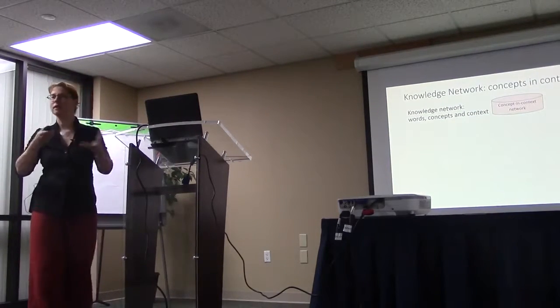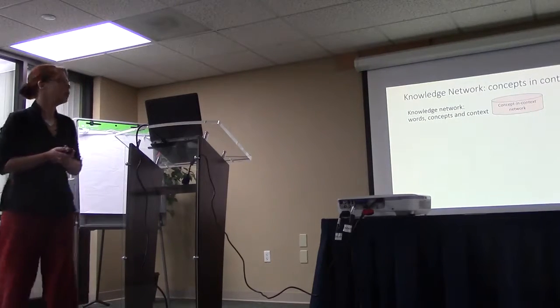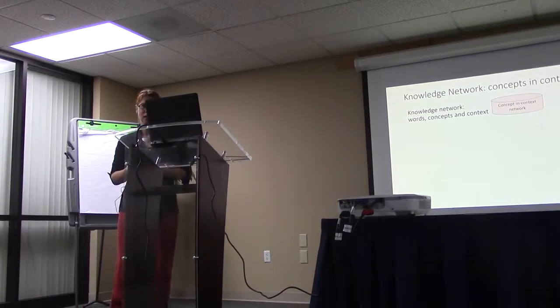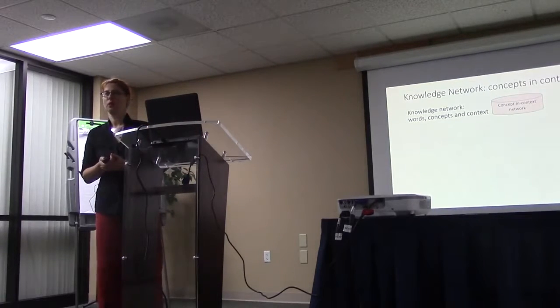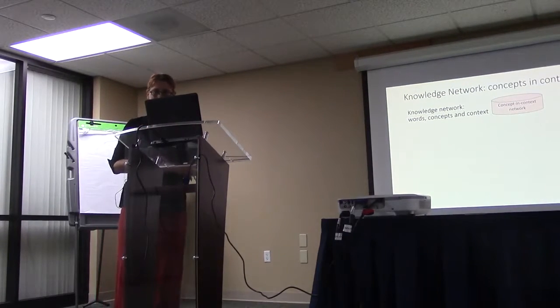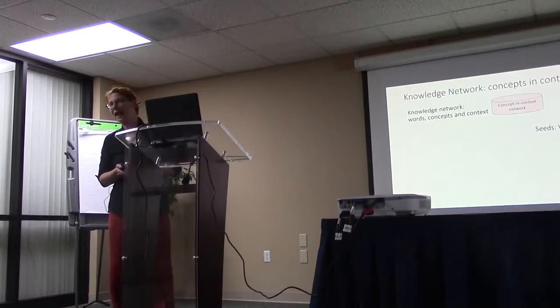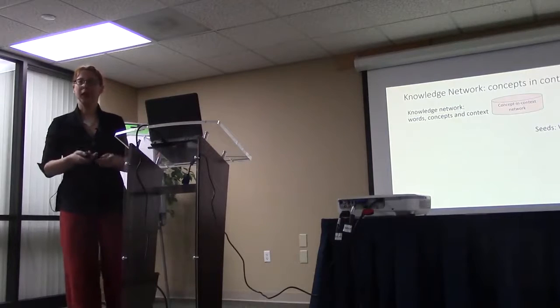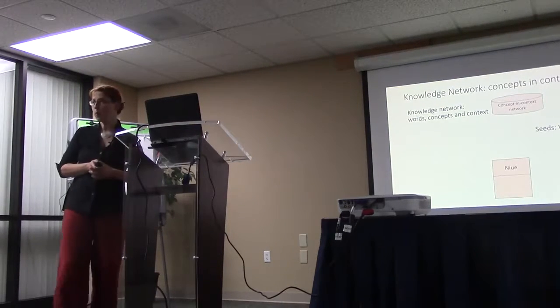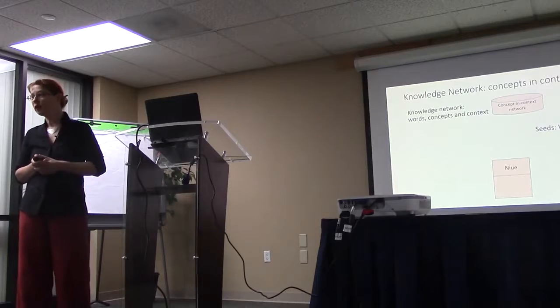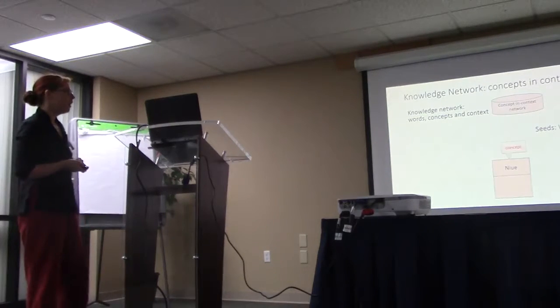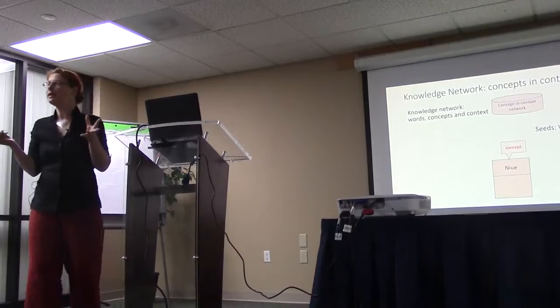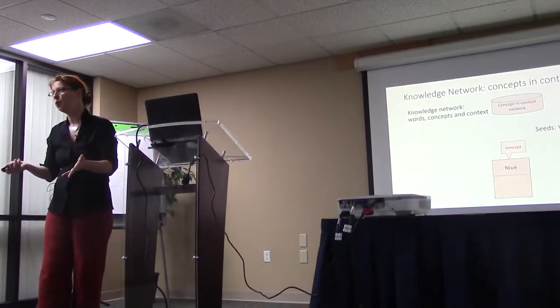So how do we do this? How do we do the translation? How do we find out what are the options in all the senses? So we have a knowledge network where we have words, concepts, and context. So it's a concept in context network, which no one can pronounce, so it's the CIC network. So what we do there is that we seed this with Wikipedia as a link structure. So we're not just taking Wikipedia words, but we take the relationships between the different articles in Wikipedia. So, for example, let's assume that there's an article about Niue Island. So that's supposed to represent the whole article in Wikipedia.